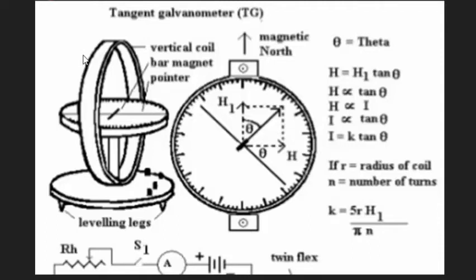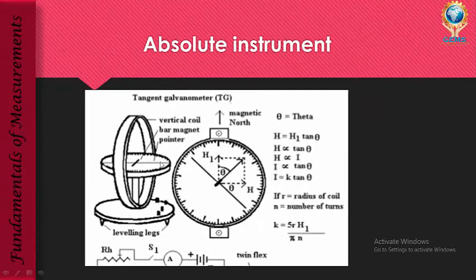Absolute instruments are highly precise and you can measure values very accurately. Whenever you are measuring with an absolute instrument, it is always measured against a predefined standard. So absolute instruments have a predefined standard — an undefined quantity is measured against this predefined standard. Though measuring the value is a little difficult, it can be done accurately, which is the advantage of an absolute instrument.